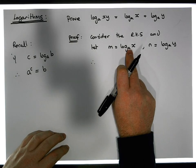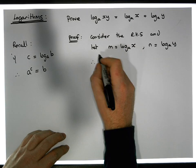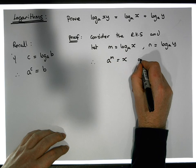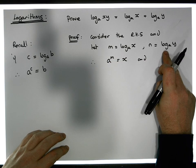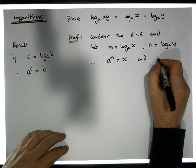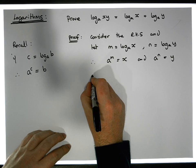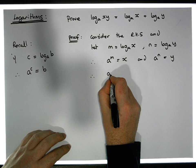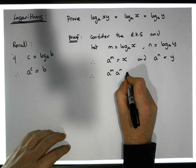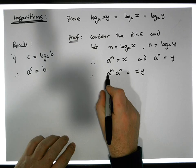In exponent form, if the log of x to the base a equals m, that says a to the power of m must equal x. Similarly, if the log of y to the base a equals n, then a to the power of n must equal y. Therefore, multiplying these together, a to the m times a to the n must equal x times y.